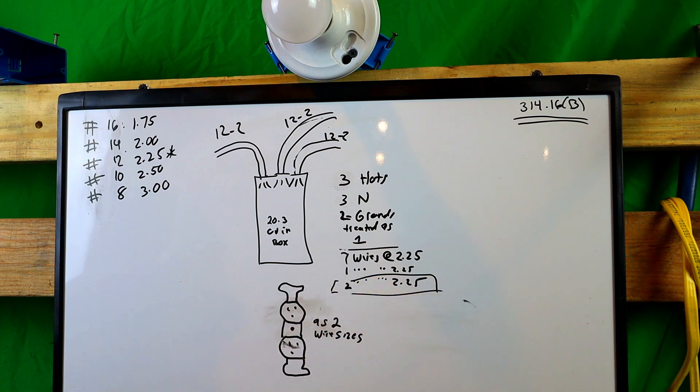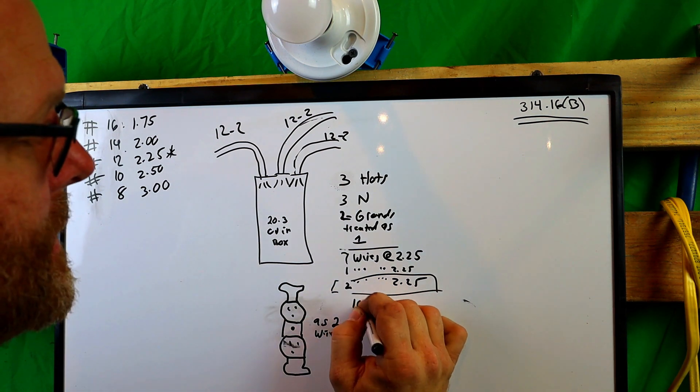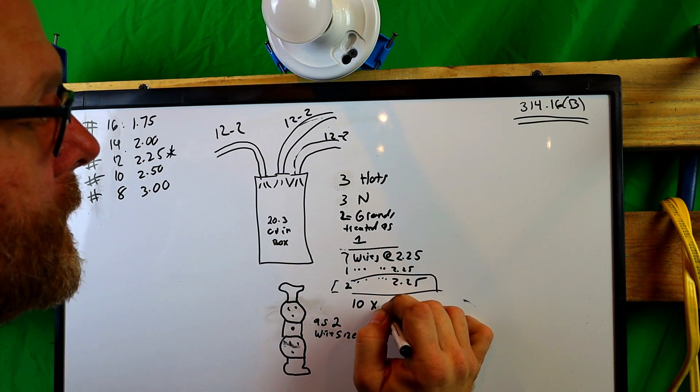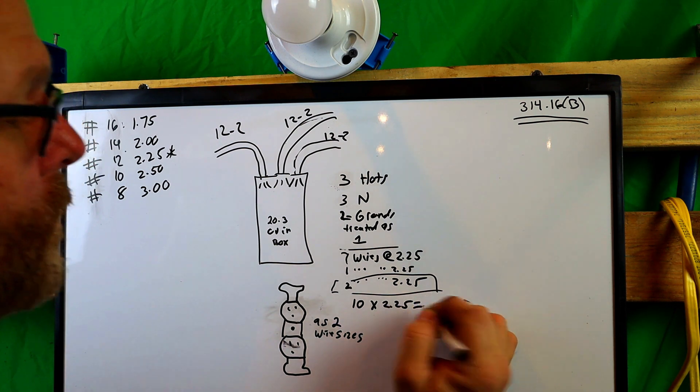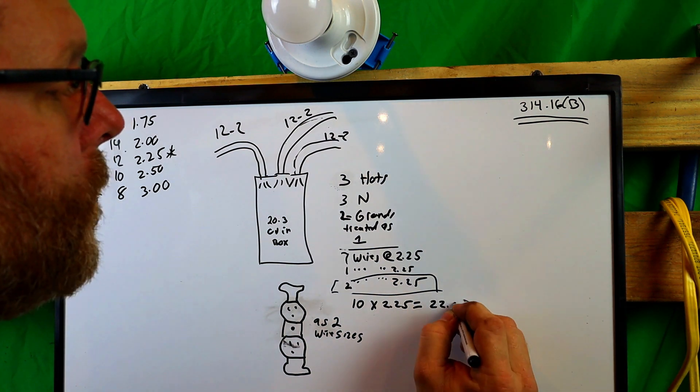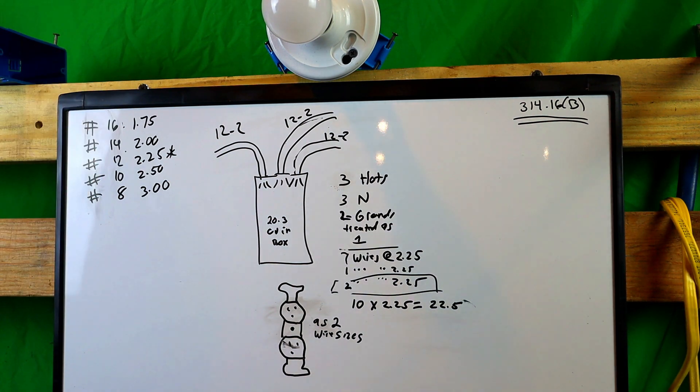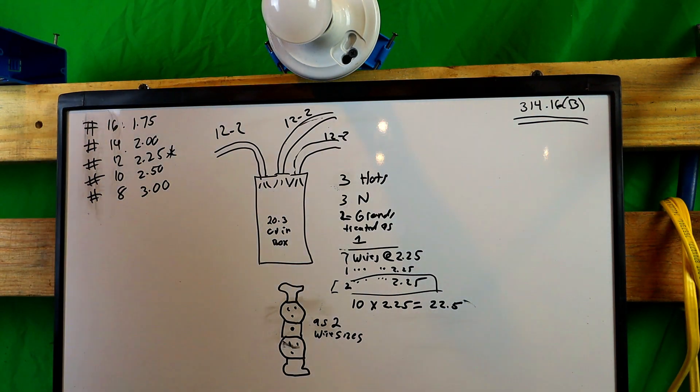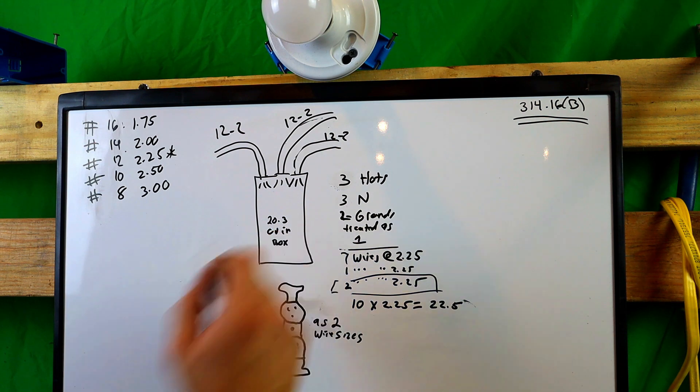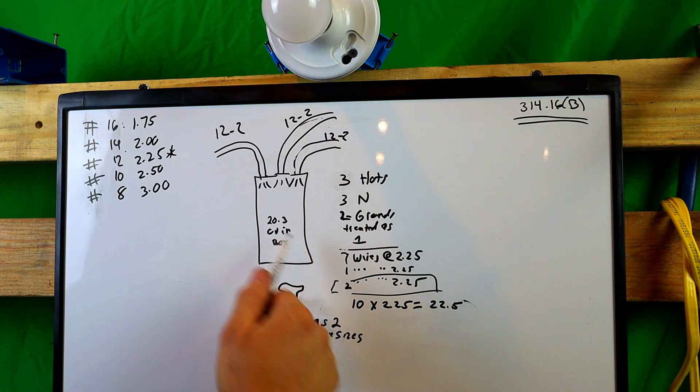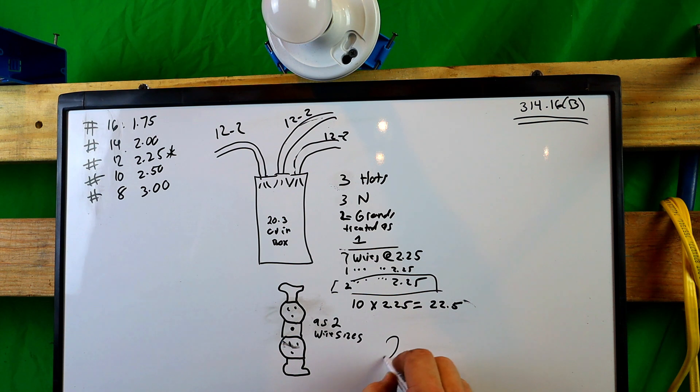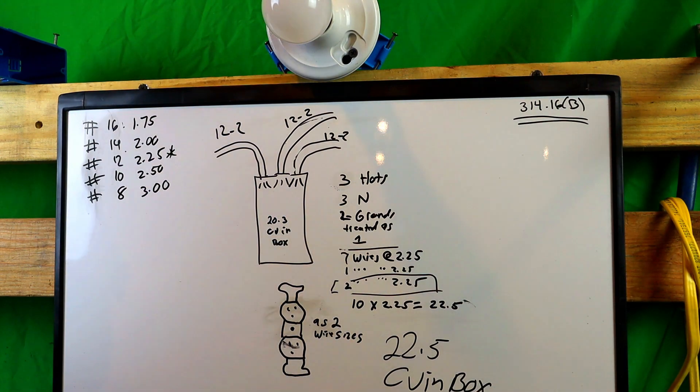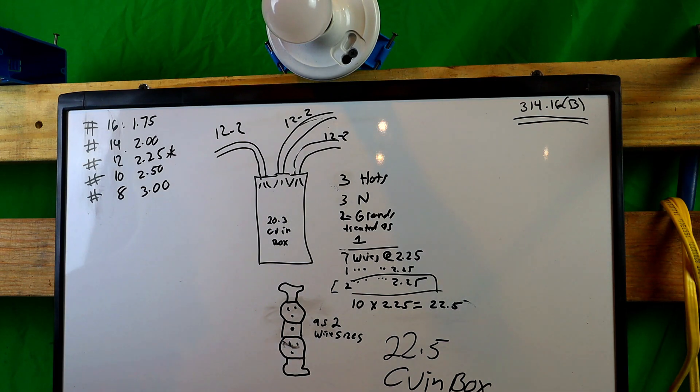So we have ten times 2.25, and that equals 22.5. Now what happens here? We're in trouble because this box here is not big enough. We need a 22.5 cubic inch box. Could you put those wires in there? Absolutely. We know we could. By code, can you? No.